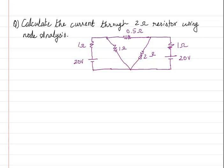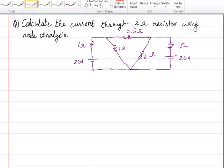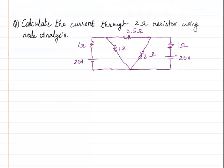Now, unlike the previous problem, here we are having voltage sources. So what is going to be the difference? One thing is that this could be taken as what we generally call a super node, but right now it is not a super node — when we discuss super node, you will understand.